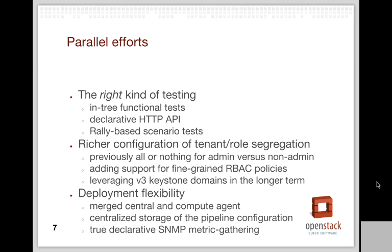Deployment flexibility improvements include merging the central and compute agents into a single polling agent that can operate in either mode or do dual duty, simplifying small deployments. We also want to centralize storage of the pipeline configuration — currently a flat YAML file deployed to each node — so it can be changed globally across large deployments, and allow SNMP metrics gathering to be truly declarative and config-driven.